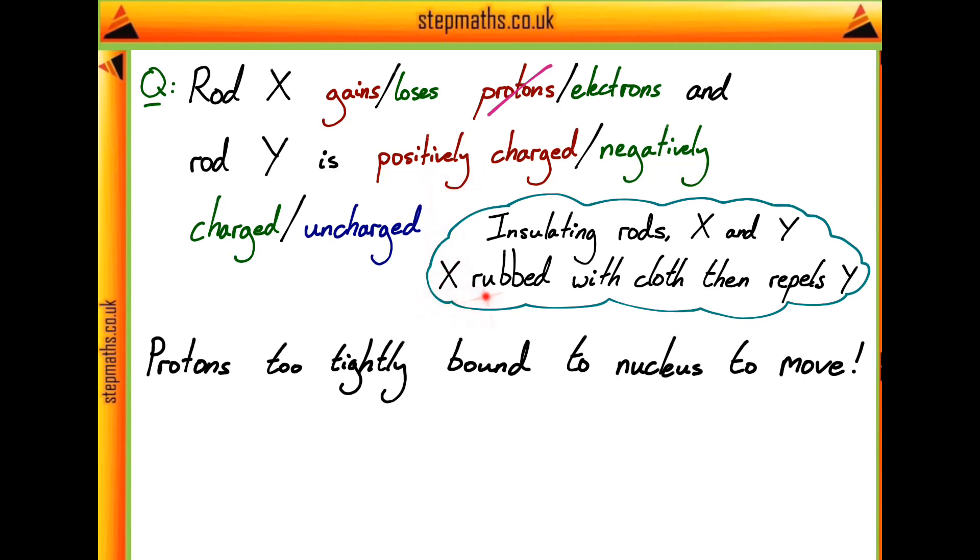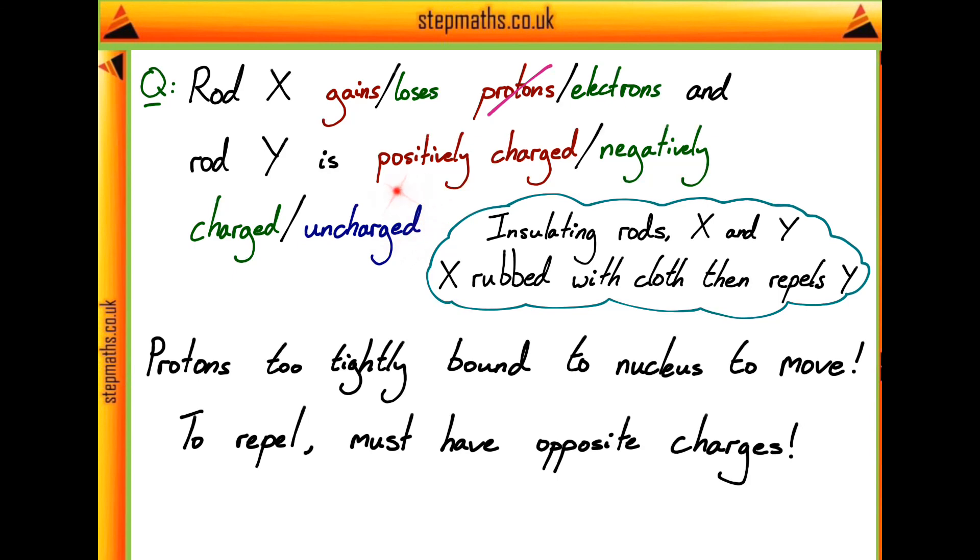Well, we know that the two rods are going to repel each other. So when we think about the charges, if something is uncharged, it can't be repelled by another charge because the charges have to be opposite to repel. So you'd have to have like a positive and a positive thing or a negative and a negative.